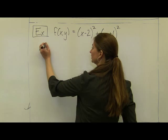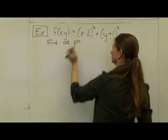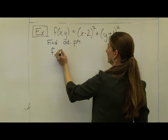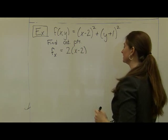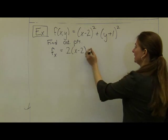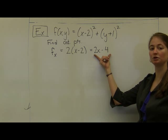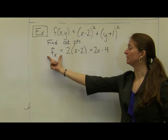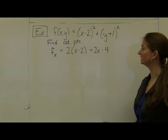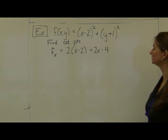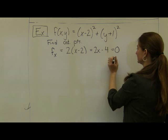To find critical points, I'll take my partial derivative with respect to x. Using the chain rule, I get 2(x−2) times the derivative of the inside, which simplifies to 2x − 4. Notice this is a continuous function with no gaps or holes, so I don't have to worry about criterion 2 — the partial derivative with respect to x will always exist. Setting it equal to zero and solving, I find that x must equal 2.